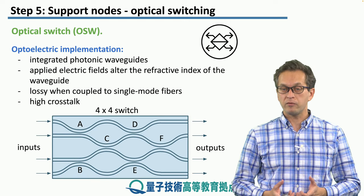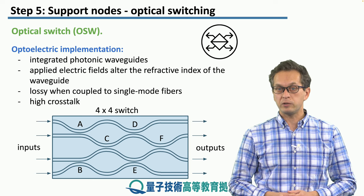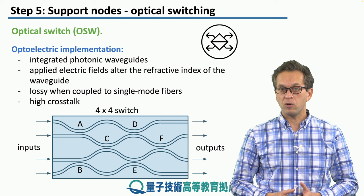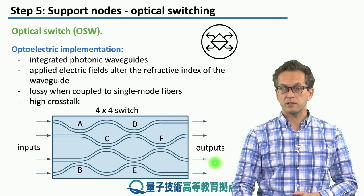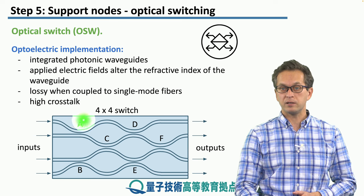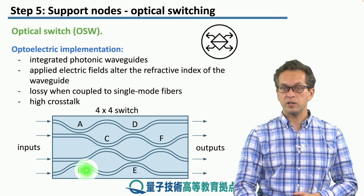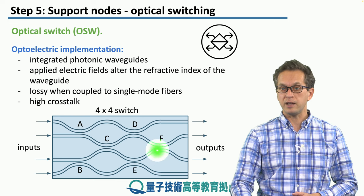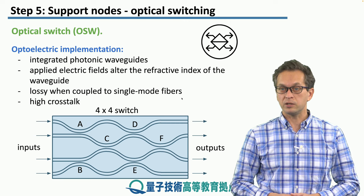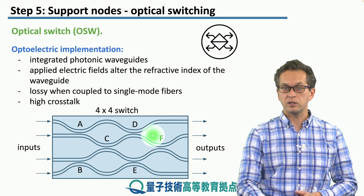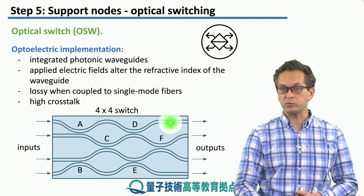A more complicated 4x4 switch can be implemented using a few 2x2 switches. In order to have a non-blocking 4x4 switch, we use six 2x2 switches represented by interferometers labeled A, B, C, D, E, and F. Depending on the configuration of the controls at each of these junctions, we can obtain the desired output configuration.